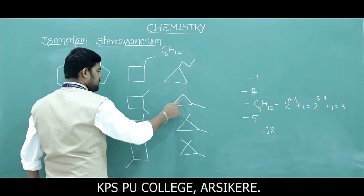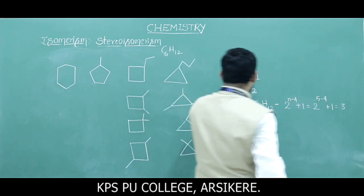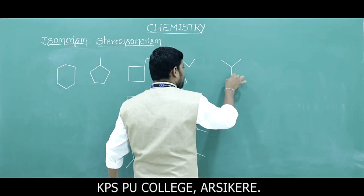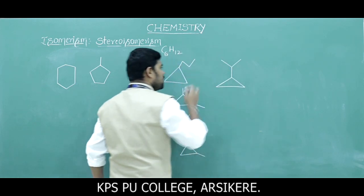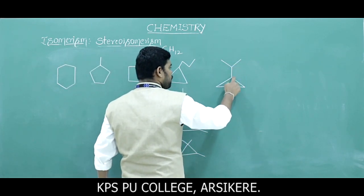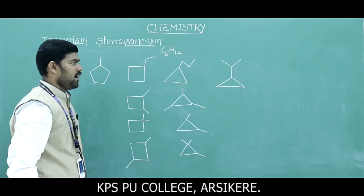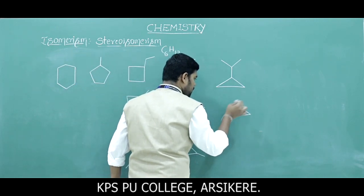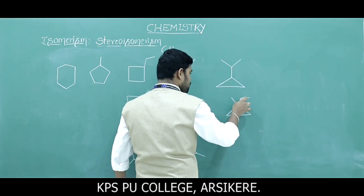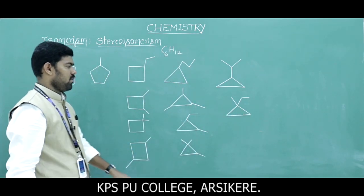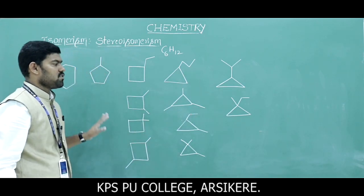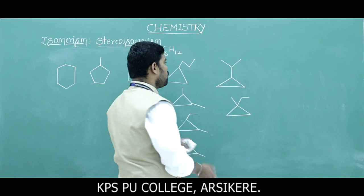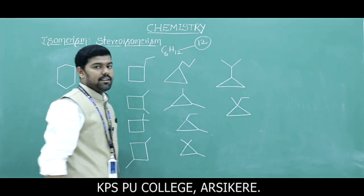Counting all structures carefully — 1 through 10 different arrangements, plus additional forms — the total possible isomers for cyclohexane is 12. This counts all ring structures and chain variants that maintain the molecular formula C6H12.